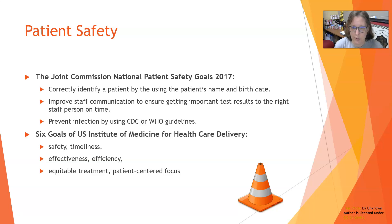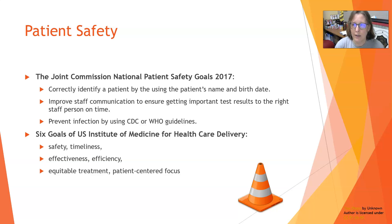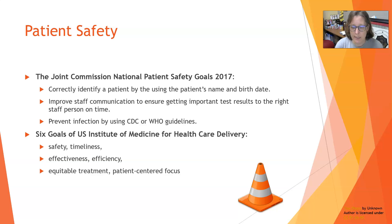The next goal was to improve staff communication to ensure that important test results are getting to the right staff person on time. If there is a critical result on a patient needing immediate intervention, it is really important to track down the right nurse or doctor caring for that patient, have them read the results back to confirm understanding, and document who you spoke to. The problem arises if you call it to a unit secretary who fails to communicate to the nurse — that delays patient care.